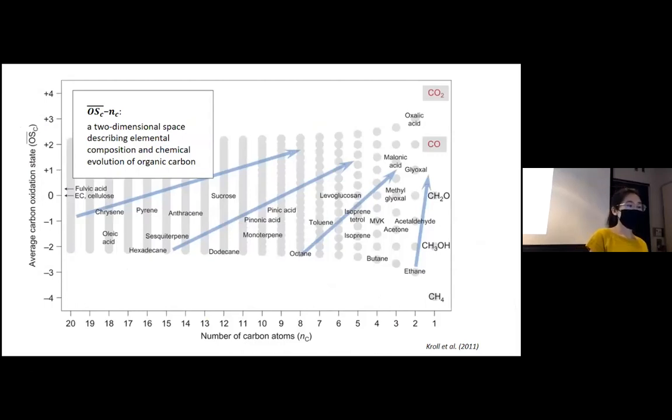Here I want to spend a minute to introduce this two-dimensional space, which will help us to have a better overall picture of the complex VOC composition. On the y-axis is the average carbon oxidation state, and on the x-axis is the carbon number. Each VOC molecule has a certain number of carbon and we can calculate the carbon oxidation state. So any VOC species can be placed in this two-dimensional space. For example, methane has a carbon number of one and a carbon oxidation state of minus four, which is located on the bottom right of this space.